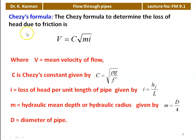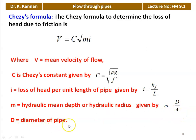The Chezy formula to determine the loss of head due to friction: V = C√(M·I), where V is the mean velocity, C is Chezy's constant (C = √(ρg/f')), I is the loss of head per unit length (I = HF/L), and M is the hydraulic mean depth or hydraulic radius (M = D/4, where D is the diameter). Using this, calculate I, then calculate HF. If the problem specifies Chezy formula, use it; otherwise, the Darcy-Weisbach equation is more commonly used.